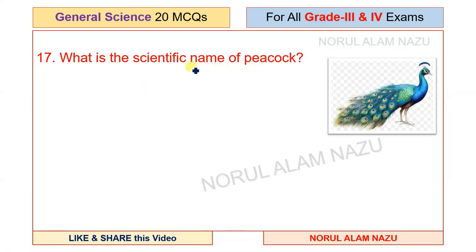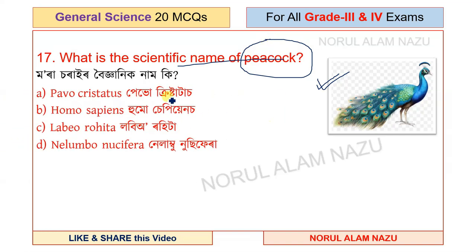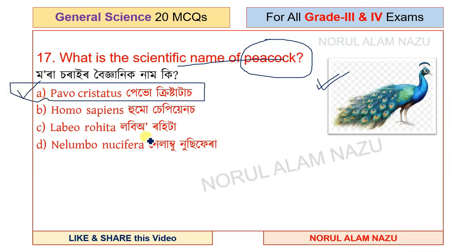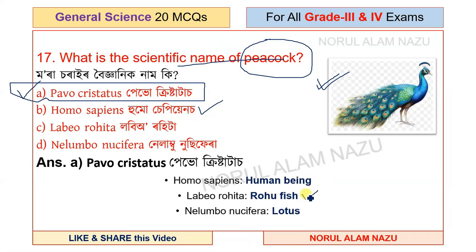Question 17: What is the scientific name of the peacock? The peacock is the national bird of India. The scientific name is mentioned along with homo sapiens being the scientific name for humans.